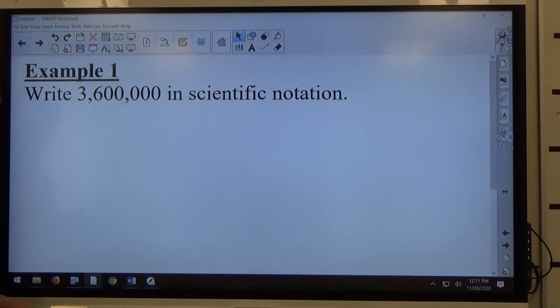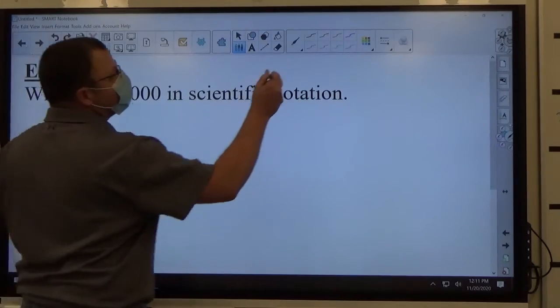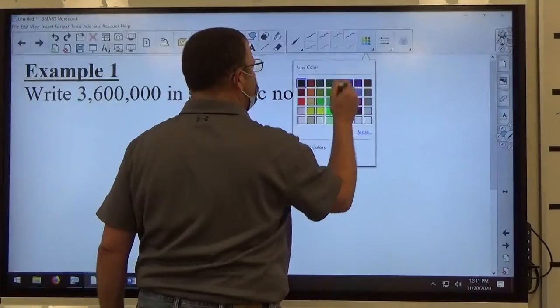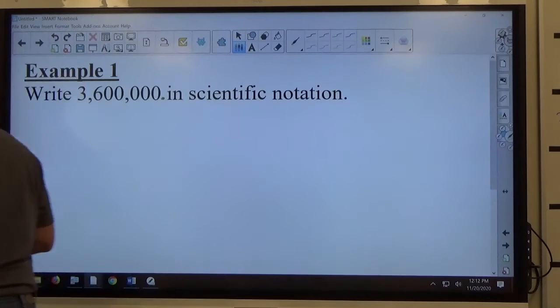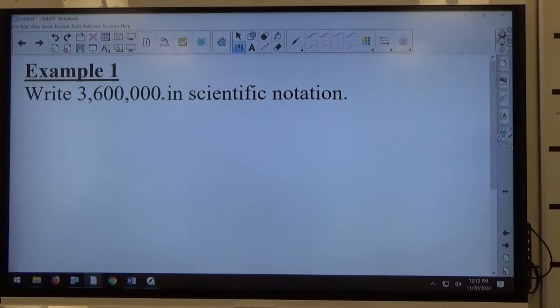Example 1, we're going to write a number in scientific notation. Scientific notation asks us to identify the position of the decimal point in the number, which, if it has no decimal point, is identified at the very end, right-hand side of the number.